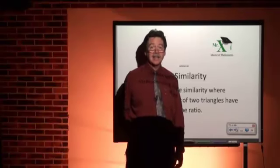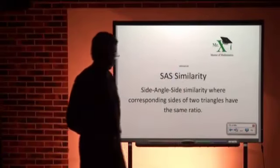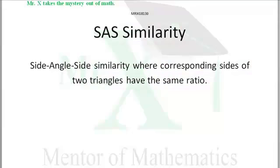Hi, Mr. X with glossary term SAS Similarity. Side-Angle-Side similarity. We're talking about corresponding sides of two different triangles having the same ratio. Then we have similar triangles. Similar means the same shape and proportions.